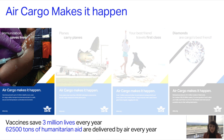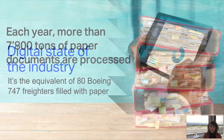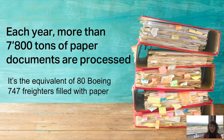Now let's look at what this means, especially for immunization, which is a very important topic nowadays. Vaccines save 3 million lives every year and almost 60,000 tons of humanitarian aid are delivered by air every year. At the same time, let's look at the digital state of the industry. Each year more than 7,800 tons of paper documents are processed — the equivalent of 80 Boeing 747 freighters filled with paper. That is a crazy amount of paper for 2020.